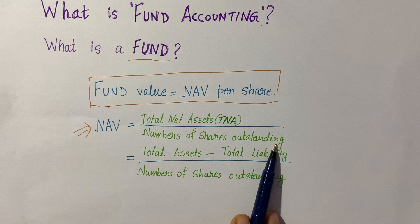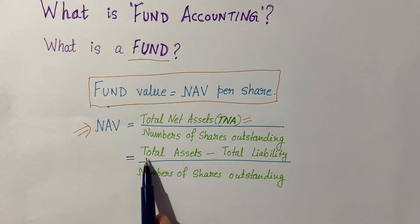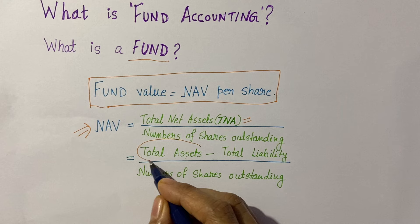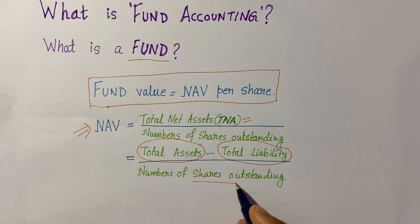A fund accountant's job is to calculate this NAV using the formula: NAV equals total net assets, or TNA, divided by the number of shares outstanding. TNA is nothing but total assets minus total liabilities. As a fund accountant, you need to have a fair idea of each of these components: the assets of the fund, the liabilities of the fund, and the shares outstanding.